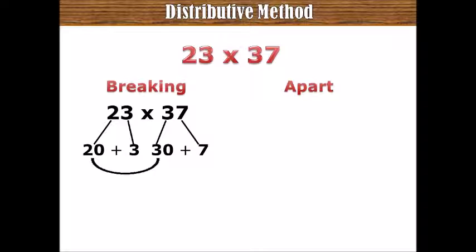So, first, you multiply 20 by 30. 20 times 30 equals to 600.